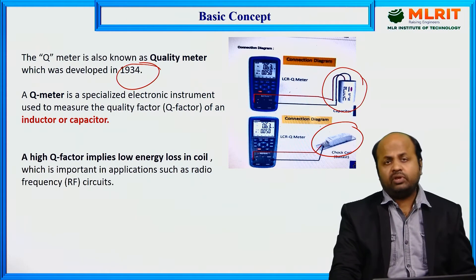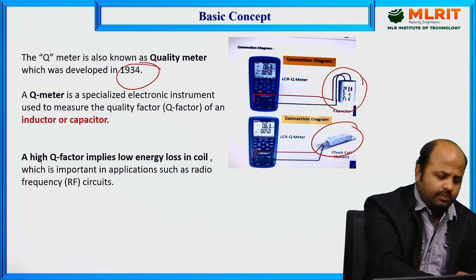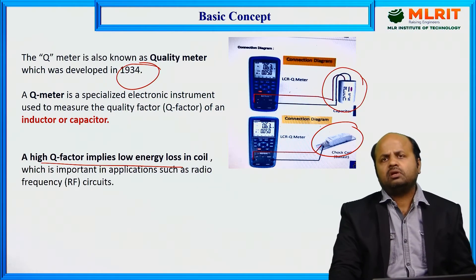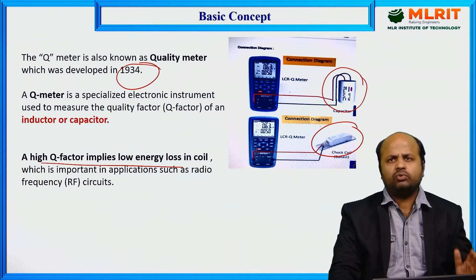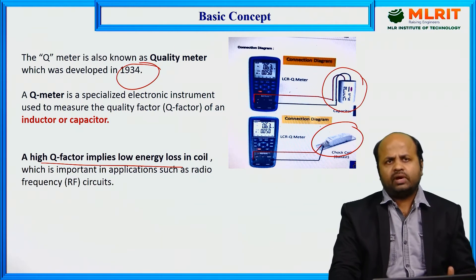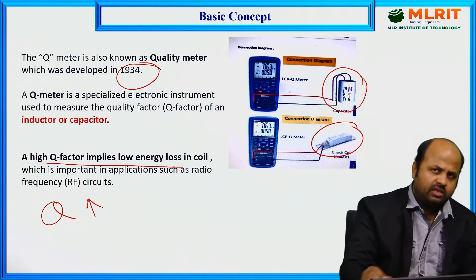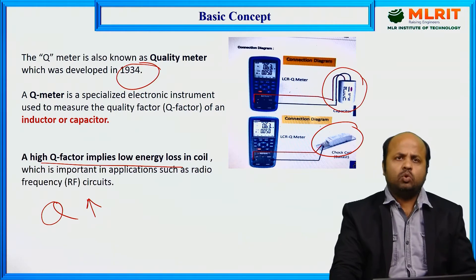A good inductor has a very high Q factor, meaning a high Q factor implies very low energy loss in the coil. As we know, there are some internal losses in the coil. If the coil has more loss, the Q factor value will be low. If the coil has less loss, the Q factor value will be very high. So if the Q factor is very high, it means the coil has low energy loss and it is a very good coil to work with.